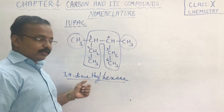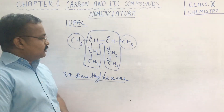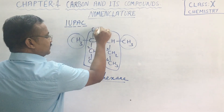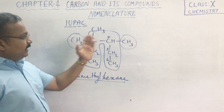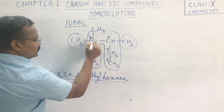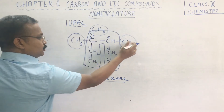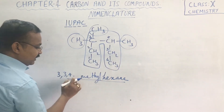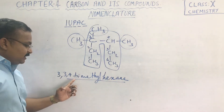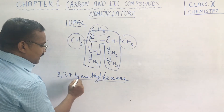Remember: if there is only one methyl group, no need to mention 'di'. Since there are two methyl groups that's why we have mentioned it as 2,4-dimethylhexane. Now suppose instead of one position we had one more CH3 group — then at the third position there are two CH3 groups so we write 3,3 and at the fourth position there is also a methyl. The prefix changes from 'di' to 'tri' because there are three methyl groups. So the name becomes 3,3,4-trimethylhexane.